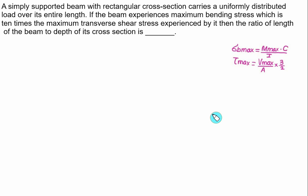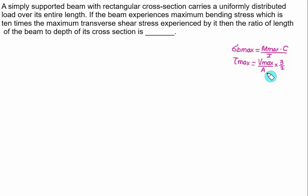For this case, the maximum bending stress is expressed as maximum bending moment multiplied by C — the distance to the top or bottom fiber — divided by I. The maximum shear stress equals the maximum shear force divided by area, that is the average shear stress multiplied by 3/2 for a rectangular section. The ratio of maximum bending stress to maximum shear stress is given as 10.